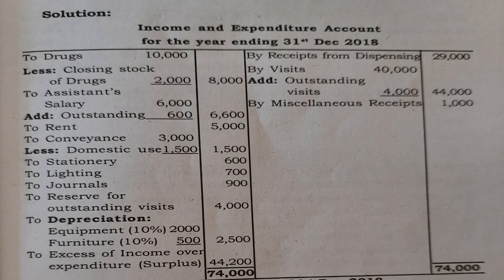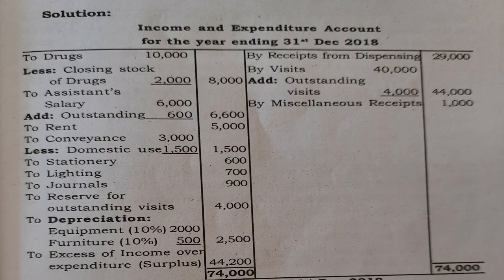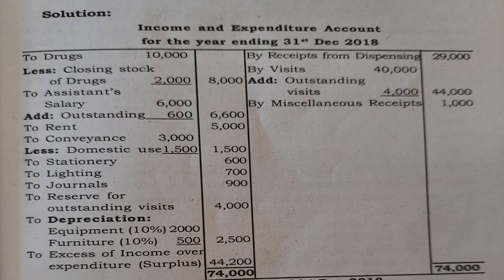Reserve for outstanding visit fees: 4,000. Depreciation on equipment: 20,000 at 10% equals 2,000. Depreciation on furniture: 5,000 at 10% equals 500. Total depreciation 2,500. Income on credit side: receipts from dispensing 29,000, visit fees 40,000 plus outstanding visits 4,000 equals 44,000, miscellaneous receipts 1,000. Total credit side 74,000. The difference of 44,200 is the surplus — excess of income over expenditure.